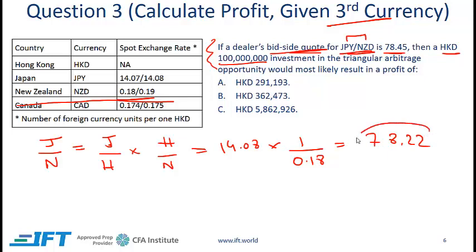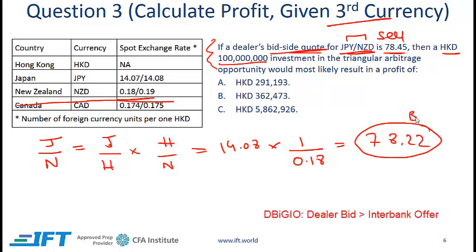The second step is to compare this with the dealer. The dealer number is higher, so we will be selling to the dealer and buying in the interbank market. It's always the base currency: we are selling New Zealand dollars to the dealer and buying New Zealand dollars in the interbank market. The challenge here is that we are starting with 100 million Hong Kong dollars — and this is where many students struggle.